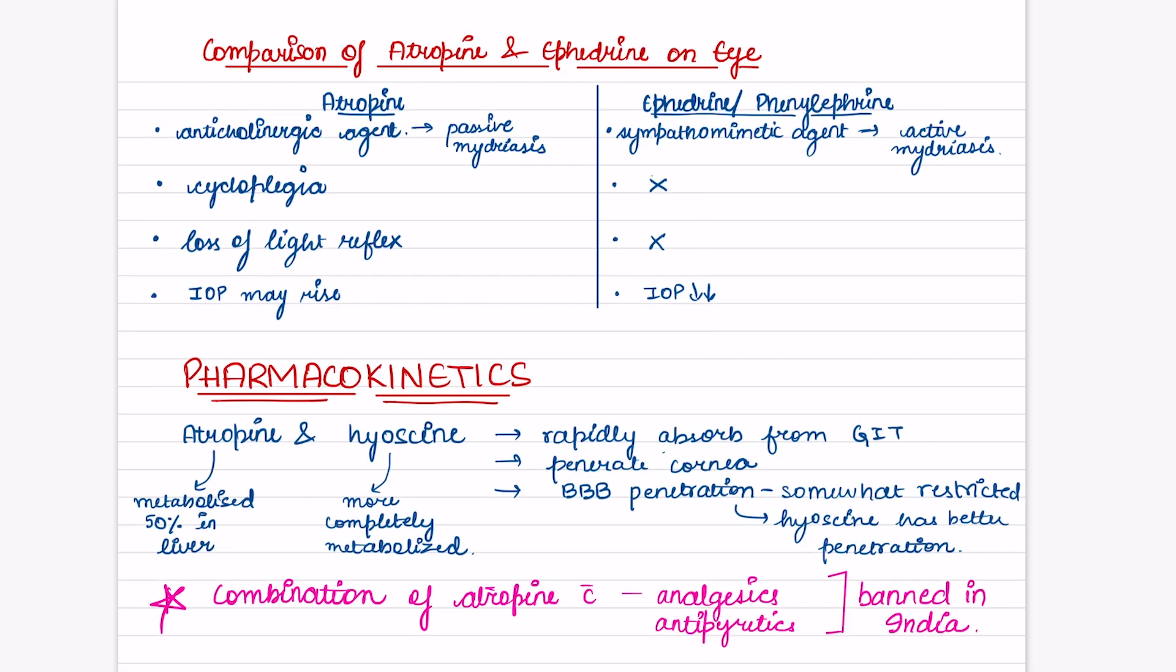We have a drug ephedrine which is a sympathomimetic drug. Let's compare atropine and ephedrine effects. Atropine is an anticholinergic agent so it causes passive mydriasis, but ephedrine or phenylephrine is a sympathomimetic agent so it causes active mydriasis. Atropine causes cycloplegia but ephedrine does not. Loss of light reflex occurs in atropine but not in ephedrine. Intraocular pressure may rise in case of atropine but not in case of ephedrine or phenylephrine.